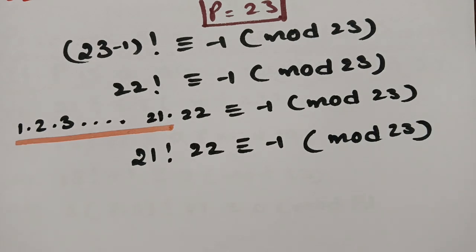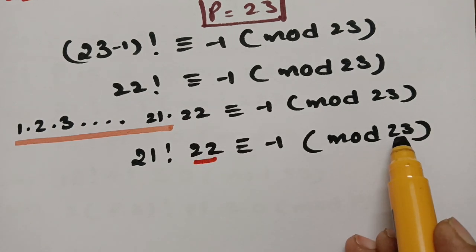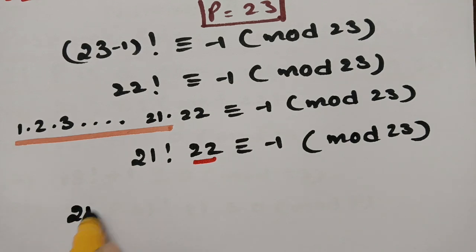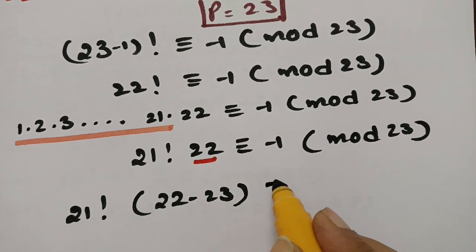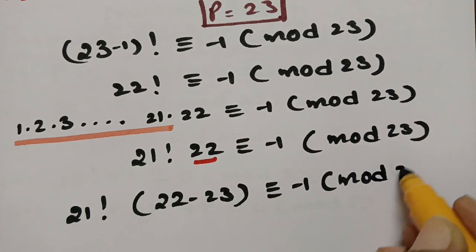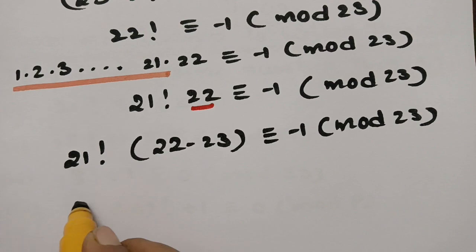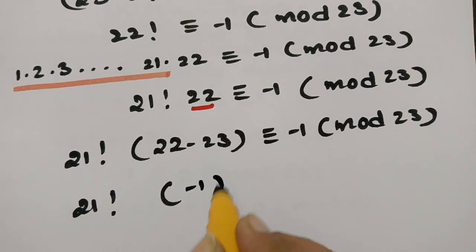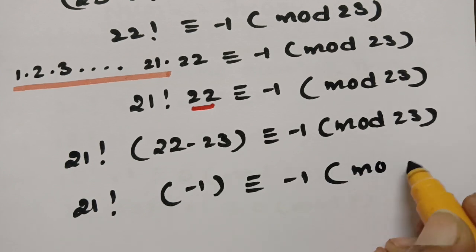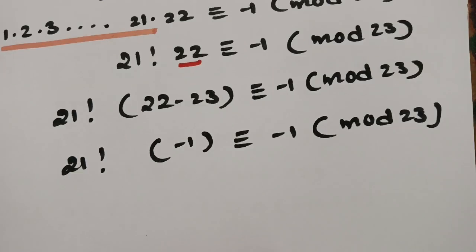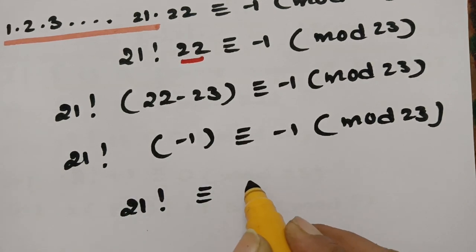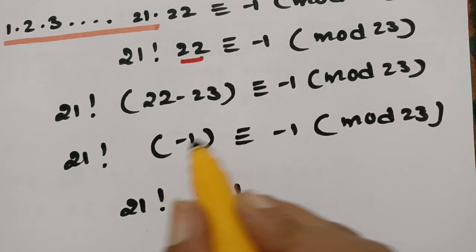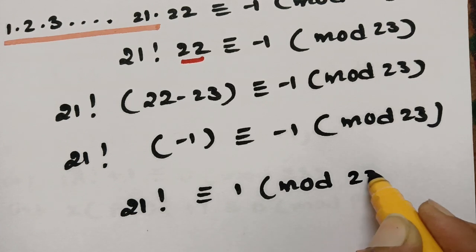Now 22 is left over. The remainder when 22 is divided by 23 is 22 − 23 = −1. So 21! × (−1) ≡ −1 (mod 23). Dividing both sides by −1, we get 21! ≡ 1 (mod 23).